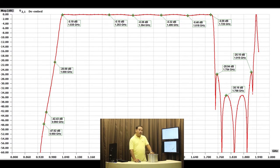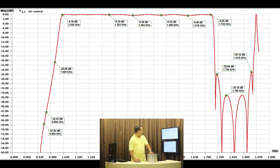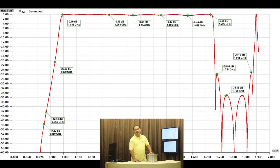Now checking the attenuation at the mobile bands: at around 950–960 MHz we have about minus 43 dB of S21, meaning the mobile signal at 960 MHz and below will be attenuated by at least 40 dB — that's a good number. On the other part of the mobile spectrum, at about 1750–1800 MHz, the attenuation is about 33 to 35 dB. So with this design we are able to reject both mobile bands well and achieve very low insertion loss in the desired passband between 1050 MHz and 1600 MHz.